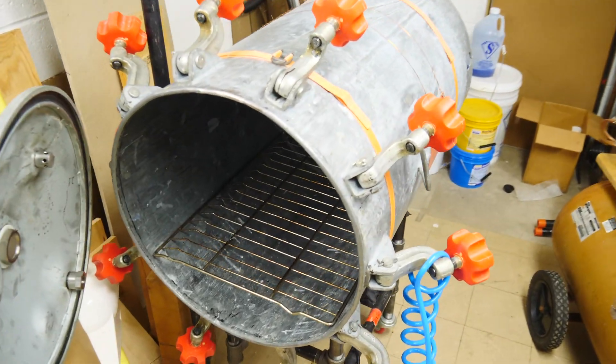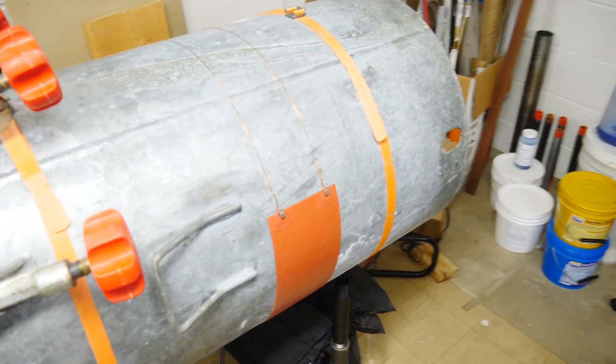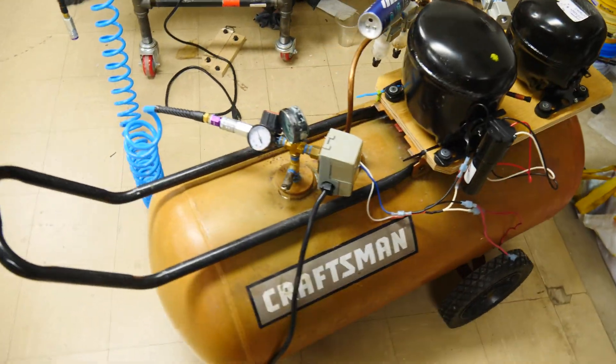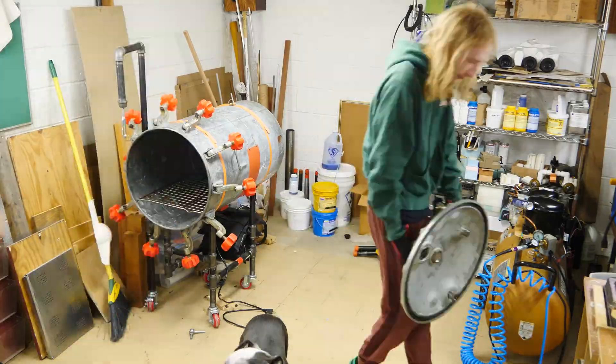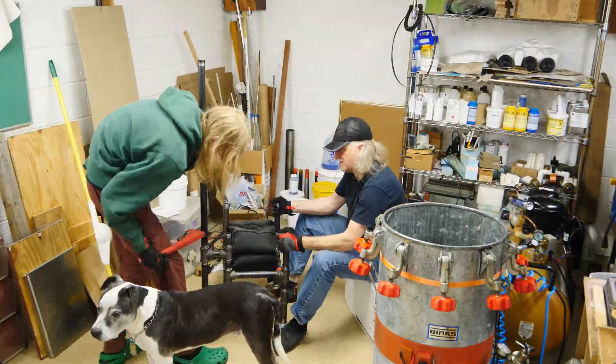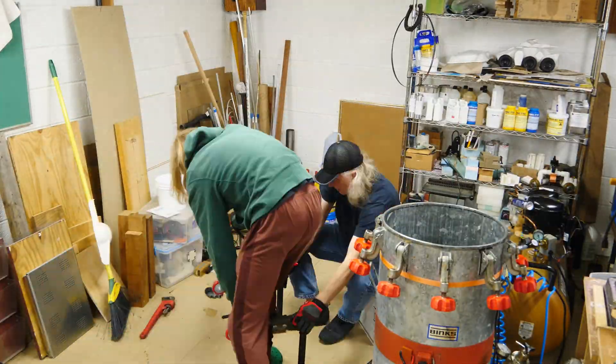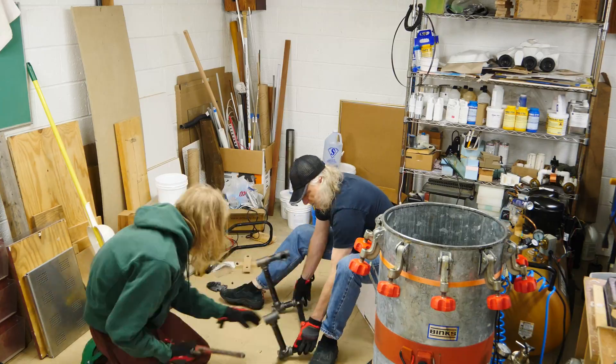First thing we got to do is take everything apart. This is the old set of tanks, the compressor with just one refrigerator compressor and the regular tank. We're going to disassemble everything and check out all the parts.